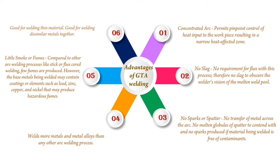5. Little smoke or fume — compared to other arc welding processes like stick or flux-cored welding, few fumes are produced. However, the base metals being welded may contain coatings or elements such as lead, zinc, copper, and nickel that may produce hazardous fumes. 6. Good for welding thin material and good for welding dissimilar metals together.